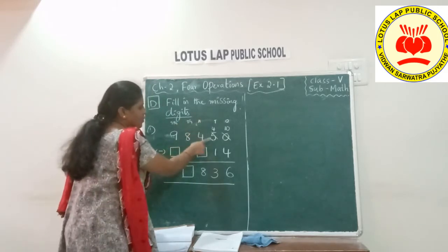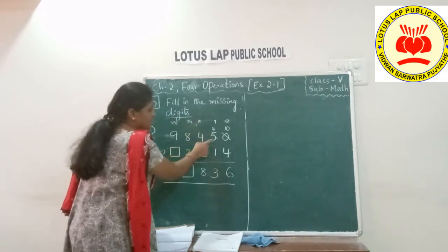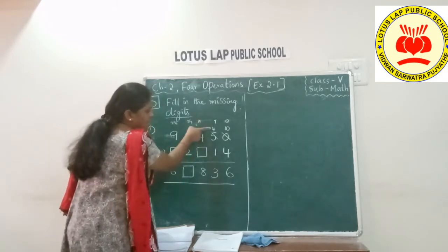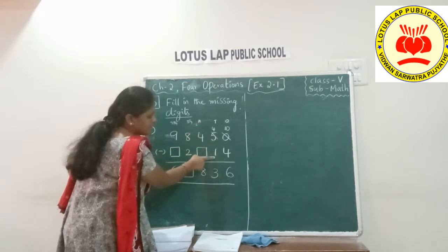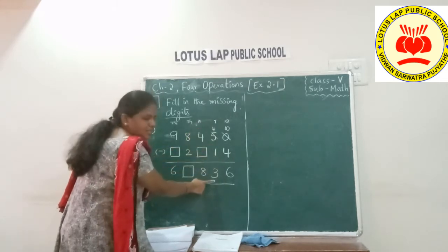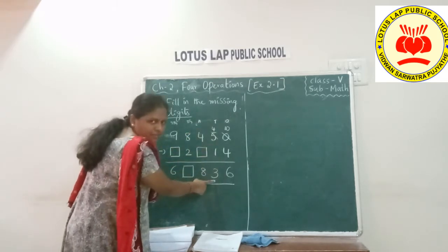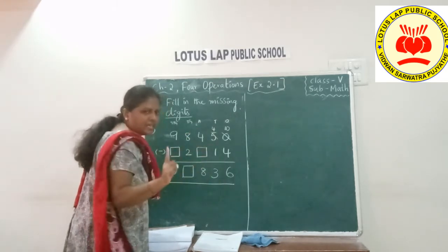Now let us move on to the tens place. What is there in the tens place? Four. Four minus one is giving us three, which is correct.